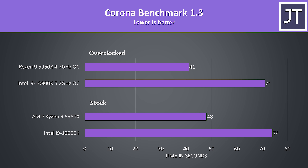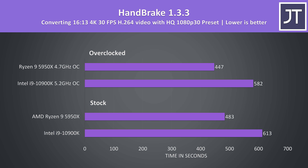The Corona benchmark also uses the processor to render out a scene. Again as another test that scales with additional threads, the 5950X was completing the task 54% faster at stock, and 73% faster when both are overclocked. Handbrake was used to convert one of my 4K laptop review videos to 1080p. This is another test that sees a benefit with more cores, so the 5950X completed the task 27% faster than the 10900K at stock, then 30% faster with both overclocked. Although a win for Ryzen, the margin isn't as large compared to the rendering workloads previously.